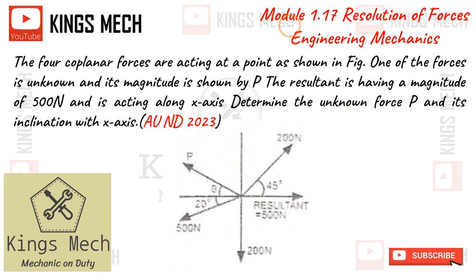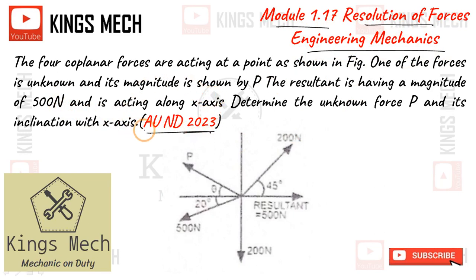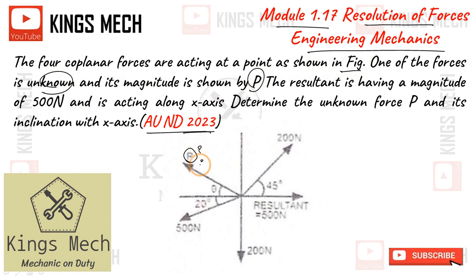Welcome back, this is Module 1.17: Resolution of Forces in Engineering Mechanics. This question is from November/December 2023 and is based on resolution, but here the unknown is a force. Four coplanar forces are acting at a point as shown in the figure. One of the forces is unknown and its magnitude is shown by P. We need to find P, given that the resultant has a magnitude of 500 Newtons acting along the x-axis.